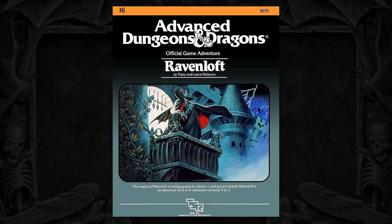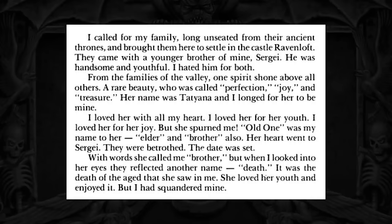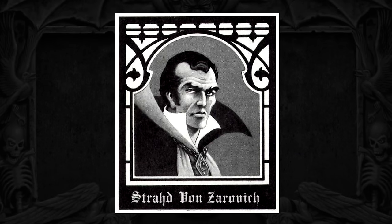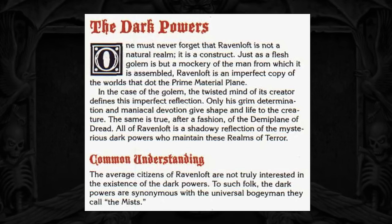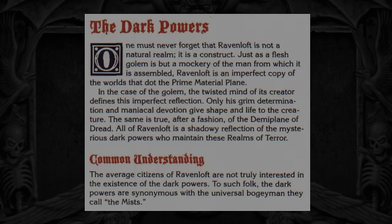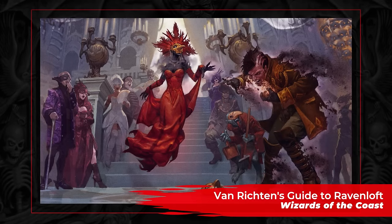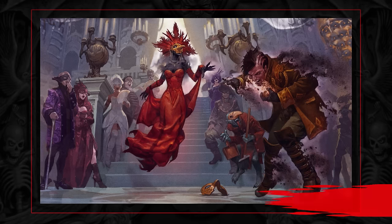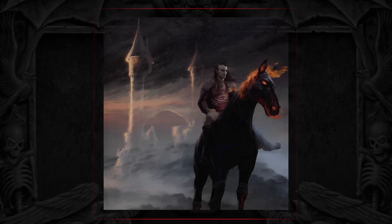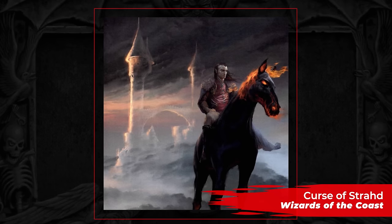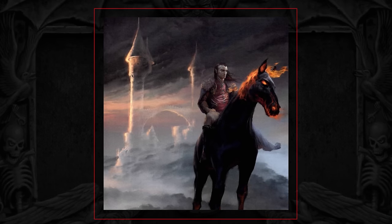Strahd became a vampire because he was jealous of his younger brother Sergei. He wanted to be with Sergei's lover Tatiana, so he made a pact with death and signed it in his brother's blood. The Ravenloft box set reveals that Strahd had inadvertently opened a connection to the Demiplane of Dread, a locale unique in that it has a mind of its own, thanks to an omnipresent force known as the Dark Powers. The Dark Powers translocated his castle to Ravenloft, along with the surrounding lands of Barovia.